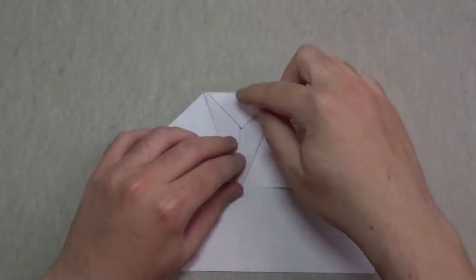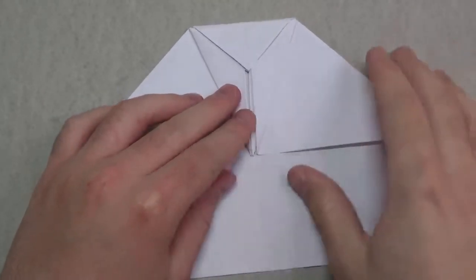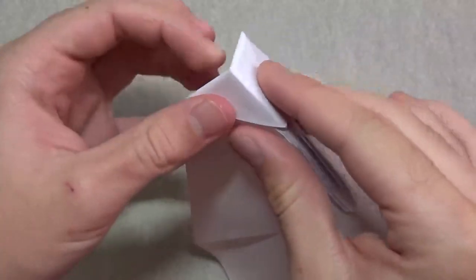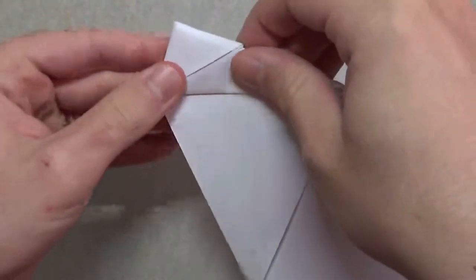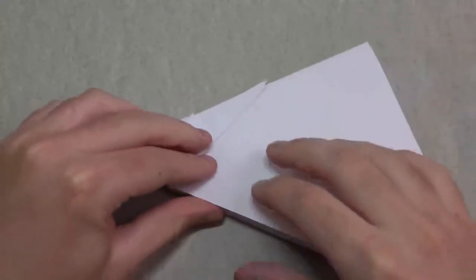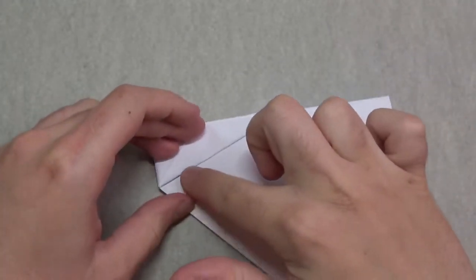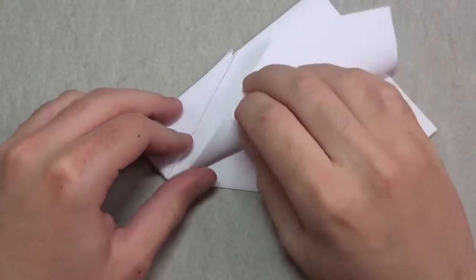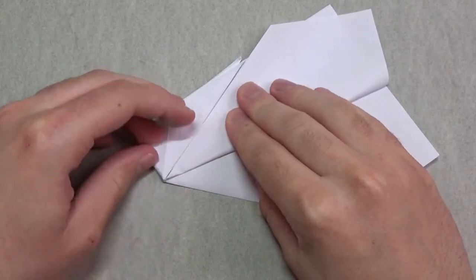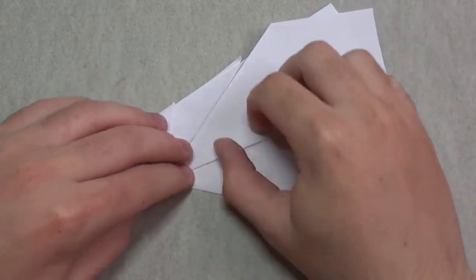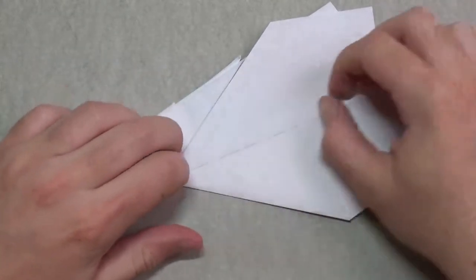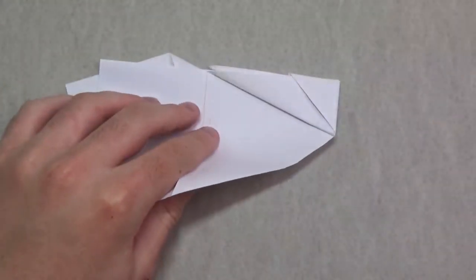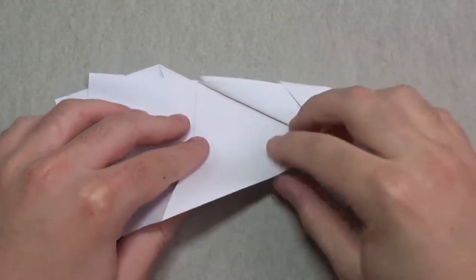Here is the nose of the paper airplane. Now we're going to mountain fold this in half. Mountain fold it like this. Now we're going to take this edge and fold it to this edge. Crease sharply. Turn over and repeat on this side. Fold this edge to this edge.